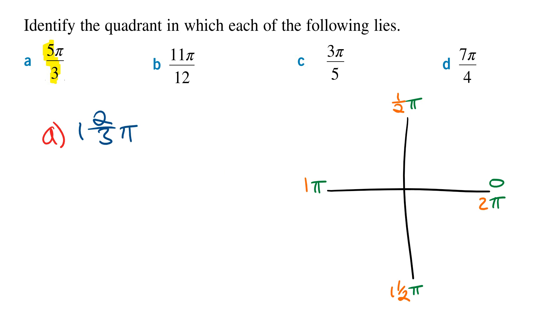Then what we need to do is find where 1 and 2/3 of π lies in the quadrant. And so looking at the quadrant, if we go 1π will be here, and then we want 2/3 of a π. 2/3 of a π is more than a half, and so we're going to be in this quadrant. And so 5π/3 lies in the fourth quadrant.